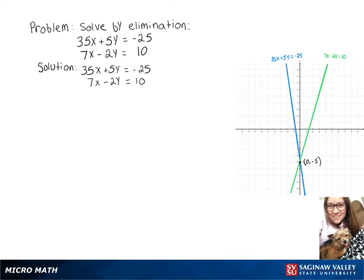We want to solve by elimination, so let's start by multiplying both sides of that second equation by 5.